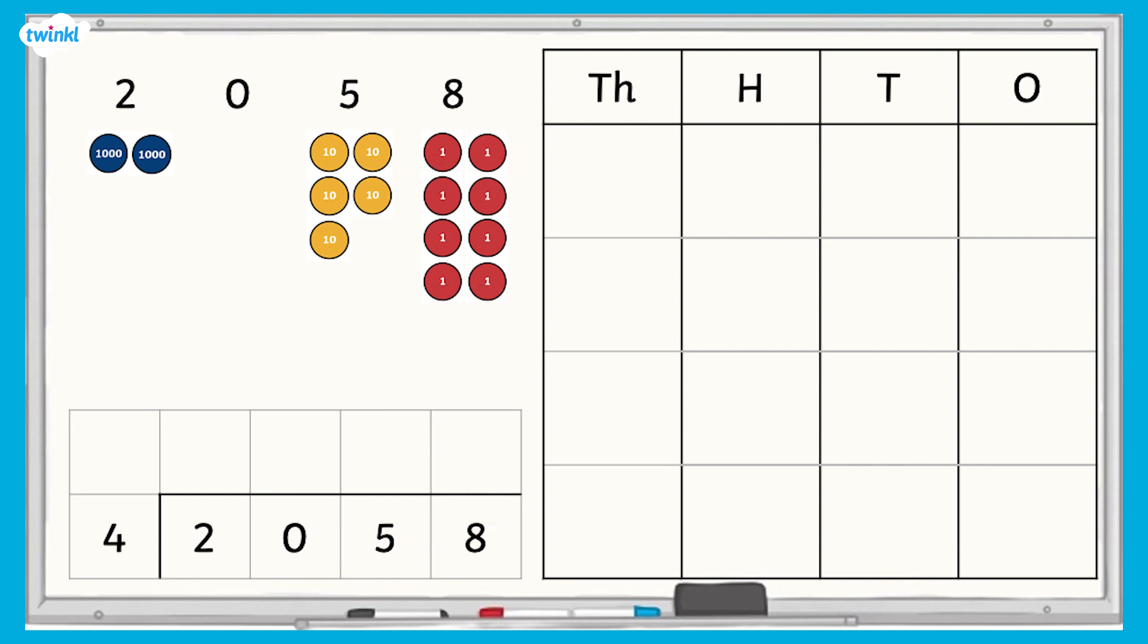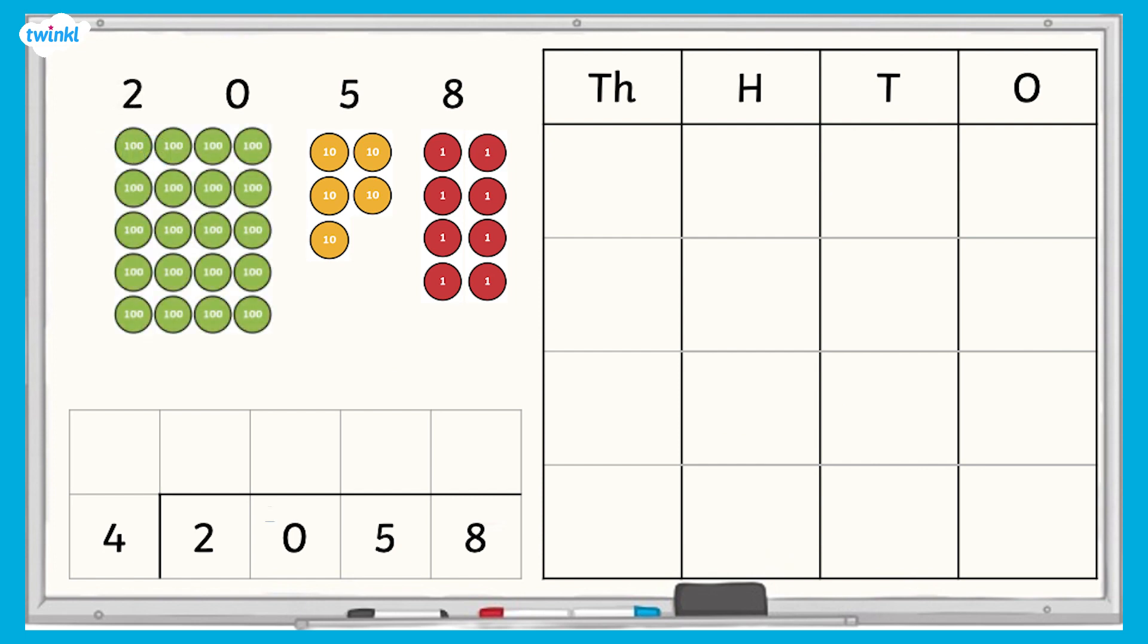First, we divide the thousands, as this is the place value column with the highest value. We only have two thousands counters, so we can't divide the counters equally into 4 groups. Therefore, we need to exchange the two thousands for twenty hundreds. We now have twenty hundreds, so we write a 2 in front of the zero in the hundreds column. We don't need to put a zero above the line because we don't have leading zeros at the start of whole numbers.